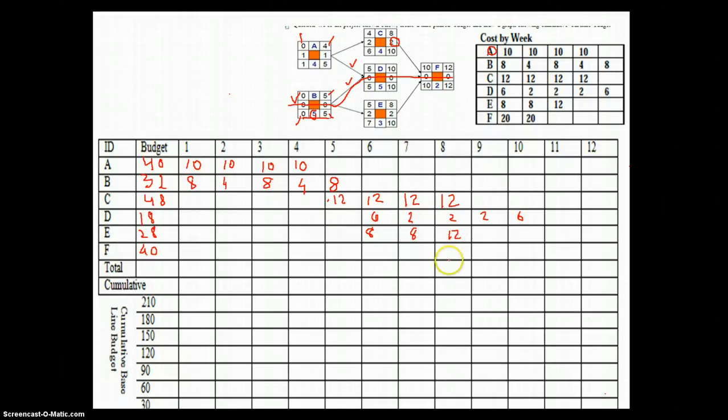And activity F is the last activity which would take place only once all of the activities have completed and it has got a budget of 20, 20. All right. So we have loaded our bar chart with the cost.